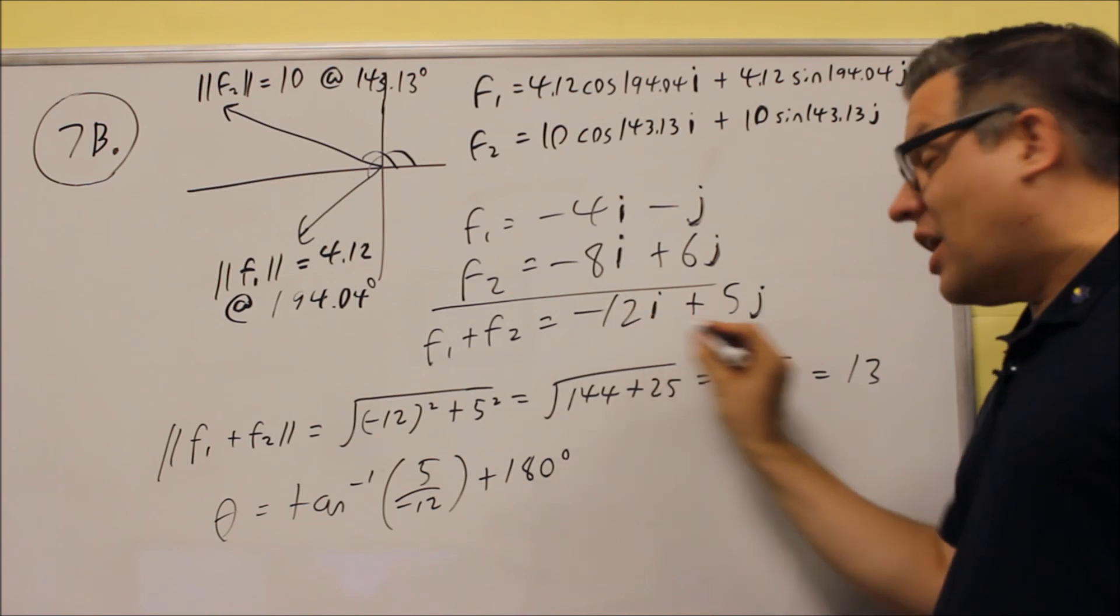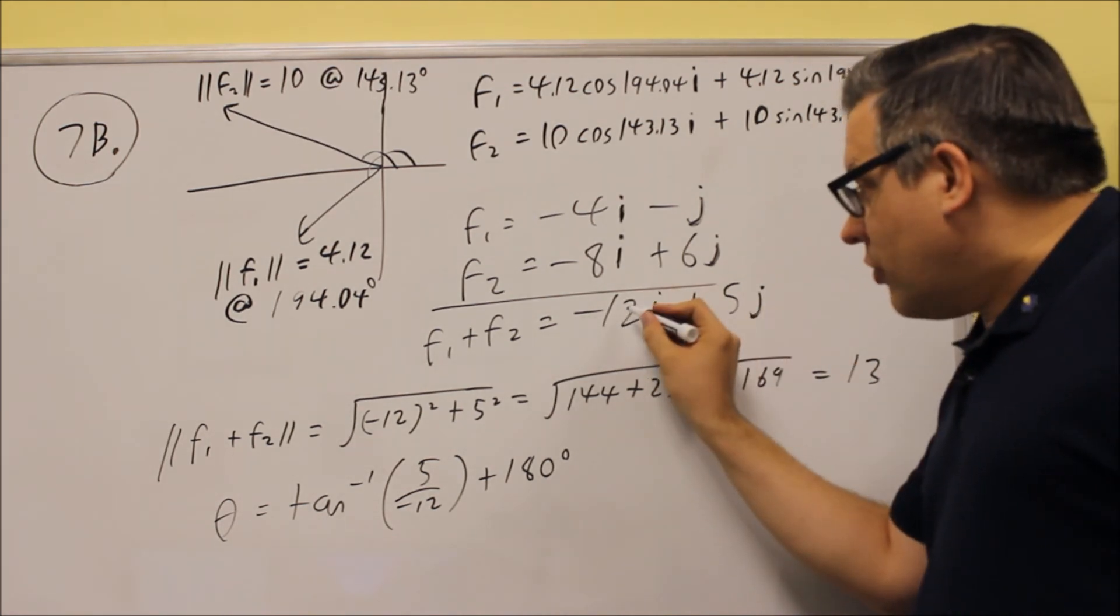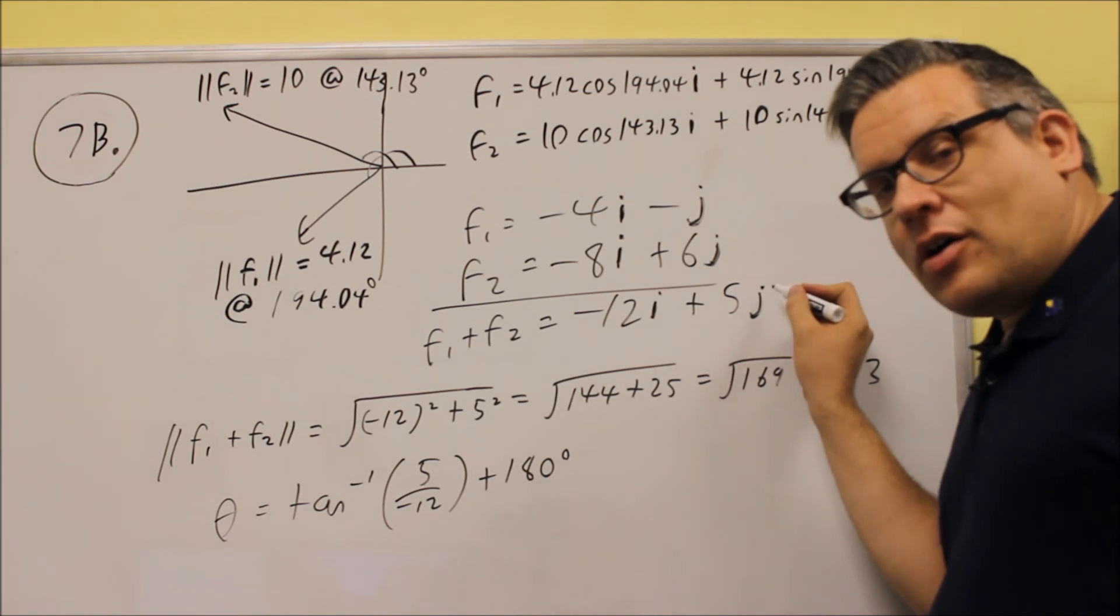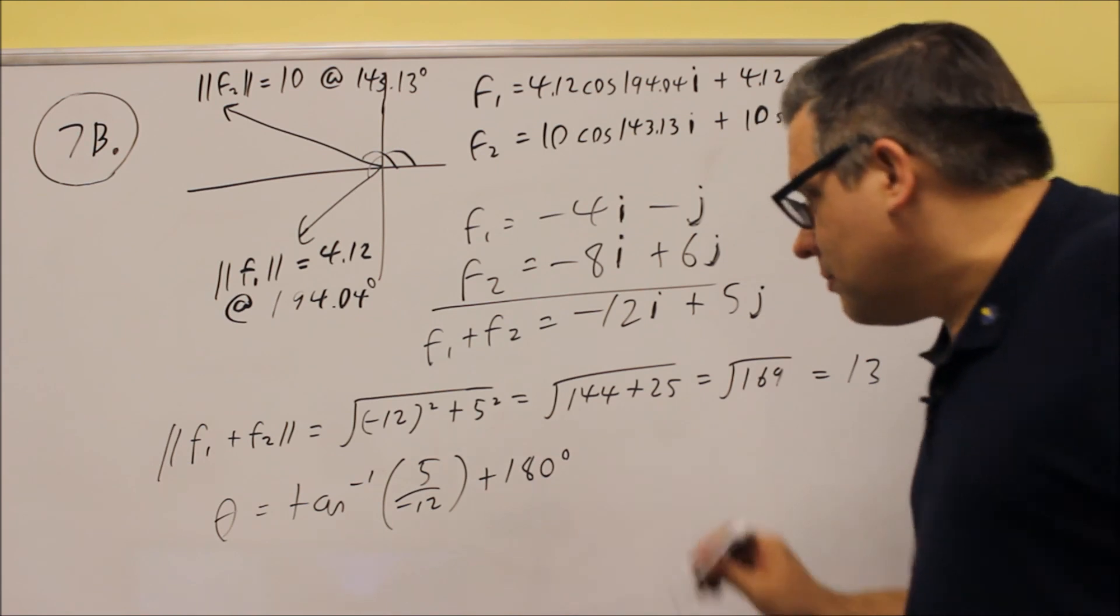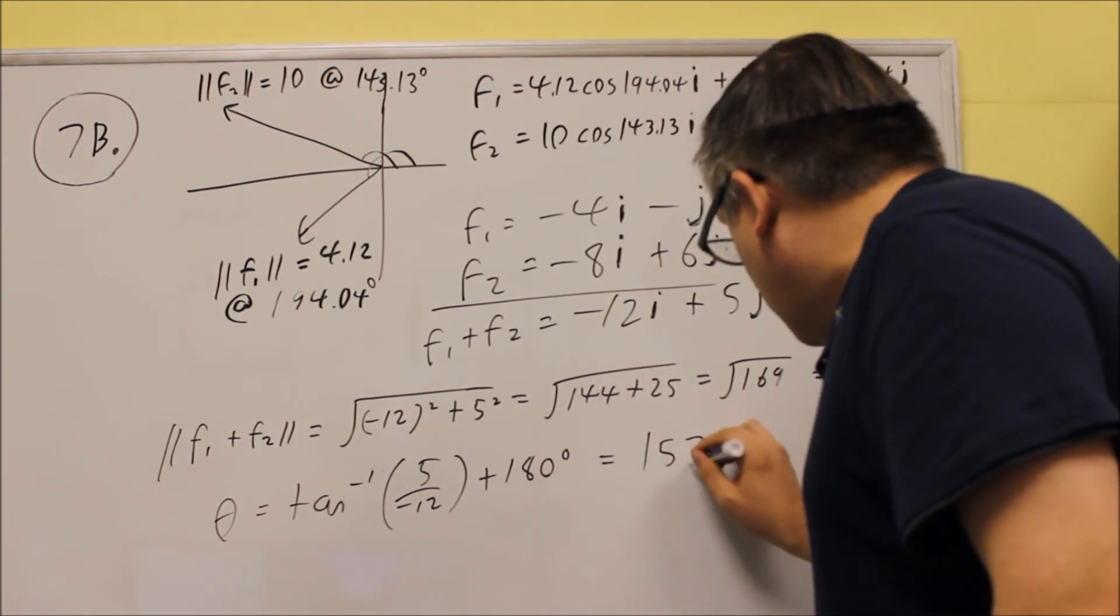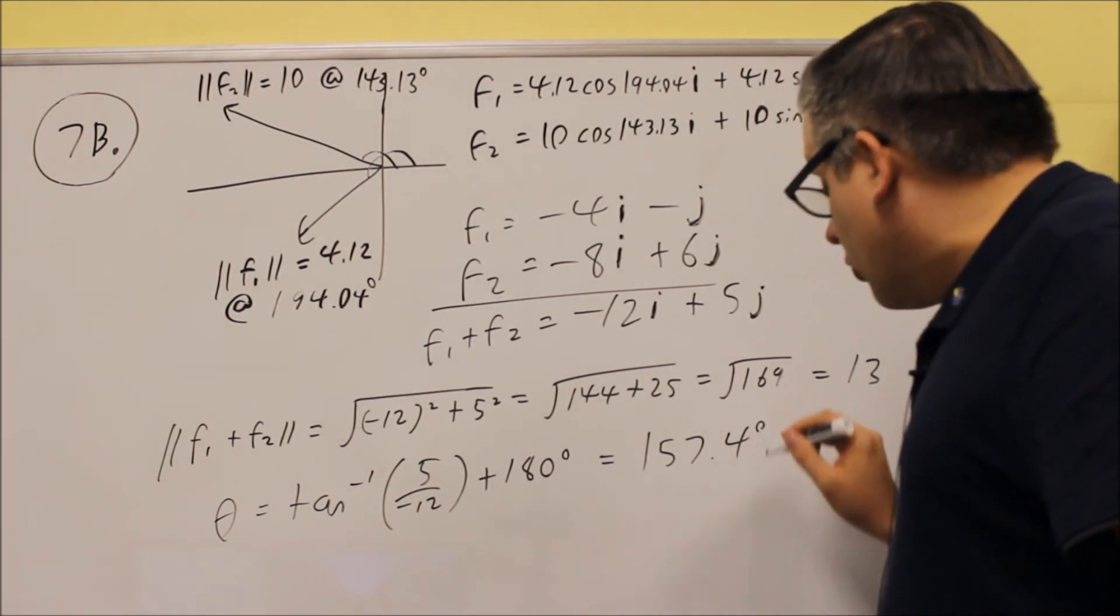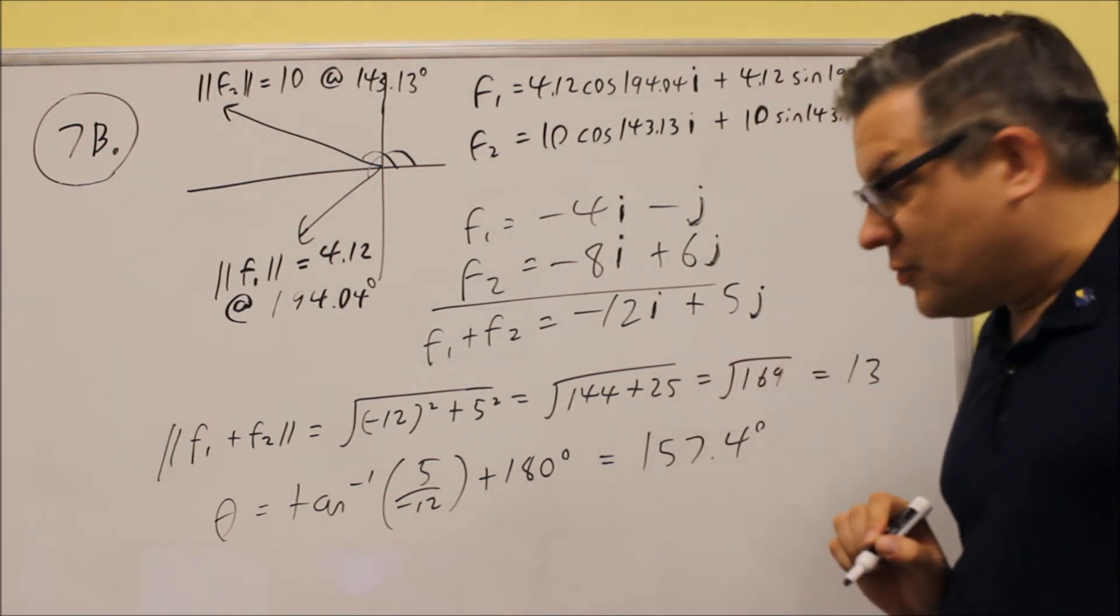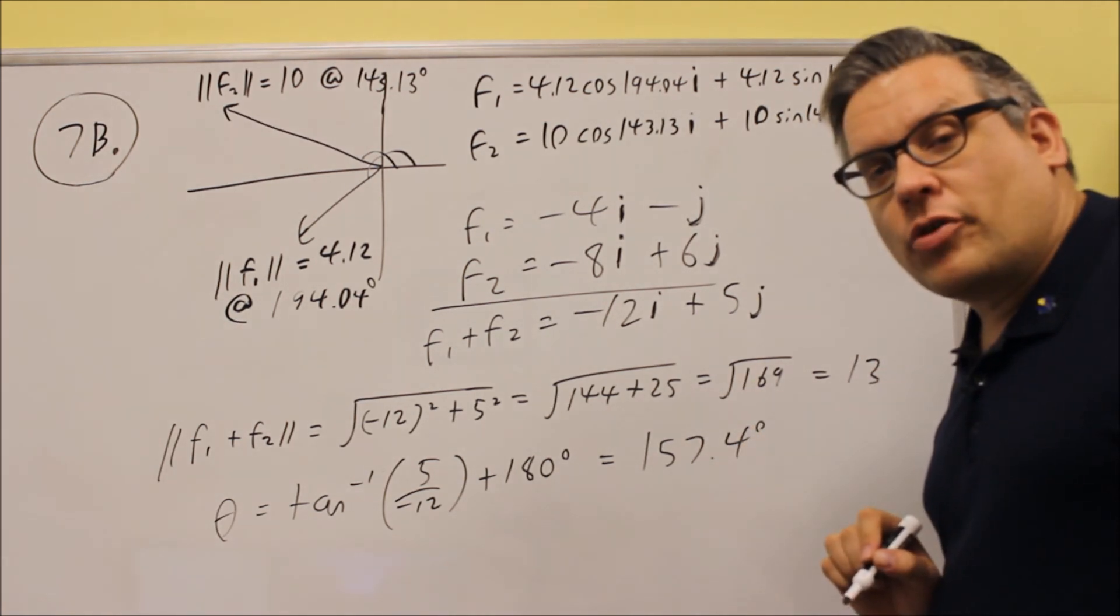And this time we do have to add 180 because we end up in the, if we were to draw this vector or think of it as a coordinate, negative x and a positive y, you'd end up in the second quadrant. So hence, that's why we use the 180 here. If you put that into the calculator, then you get 157.4 degrees. That would be your direction. So the magnitude would be 13, and the direction is 157.4 degrees.